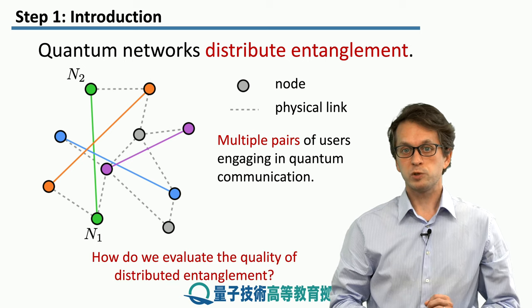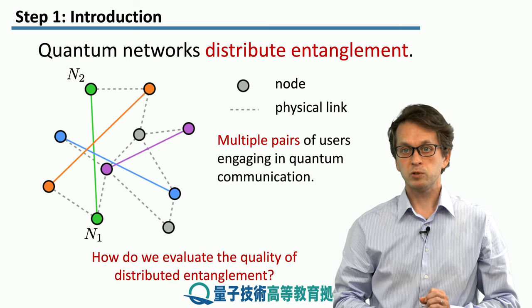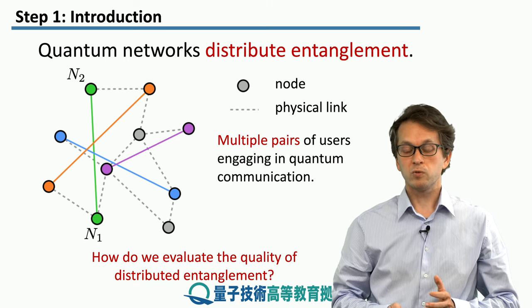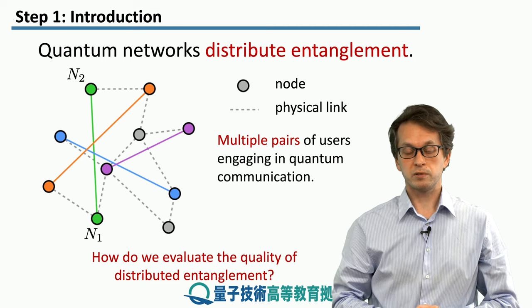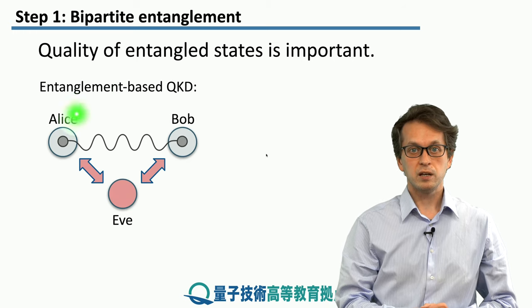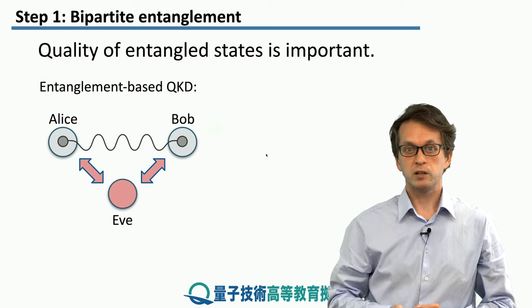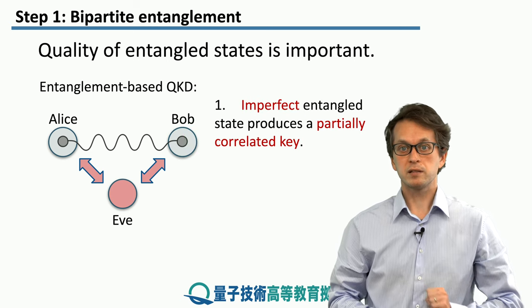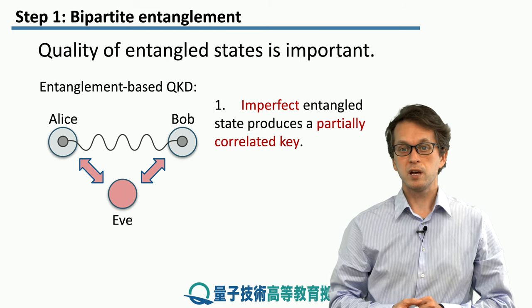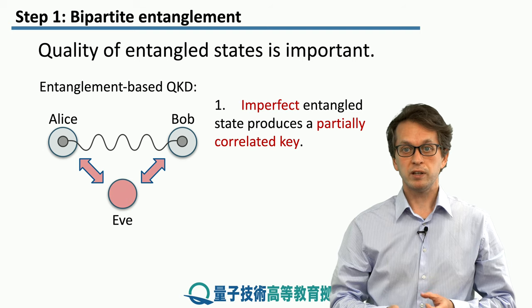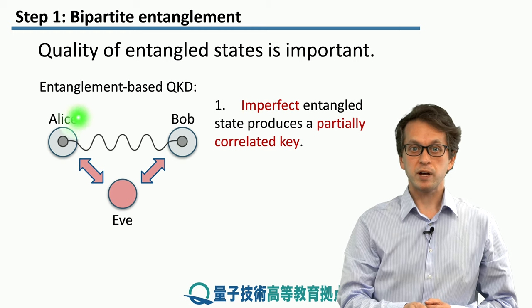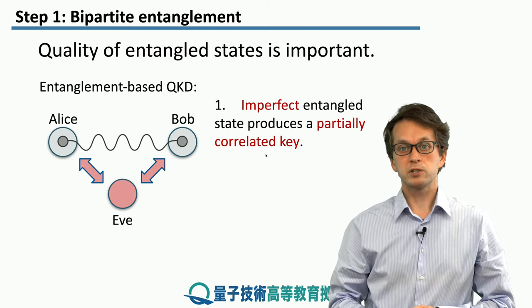One question we have not addressed in detail is: how do we evaluate the quality of the established entanglement? After all, quality directly impacts some of the protocols. In entanglement-based QKD, the quality of the entanglement shared between Alice and Bob directly impacts the key they are trying to establish. If the entanglement is not perfect — if they don't share a pure maximally entangled state — then the key they end up with at the end of the protocol will also be only partially correlated.